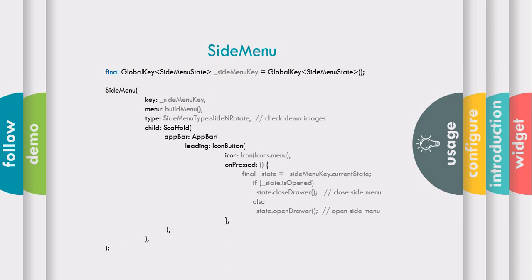Third is the type. Type defines what type of animation or transition you want in your side menu. And fourth, the child. The child will be containing your app bar wrapped up in your scaffold and other action buttons that you want on your app bar.